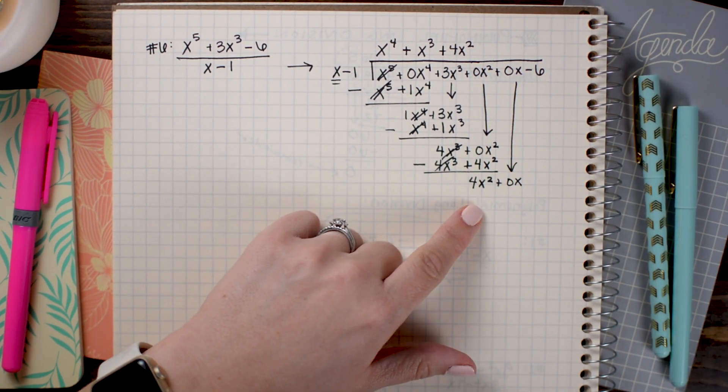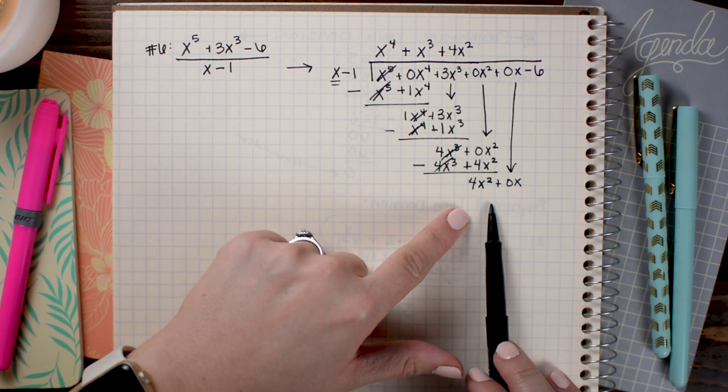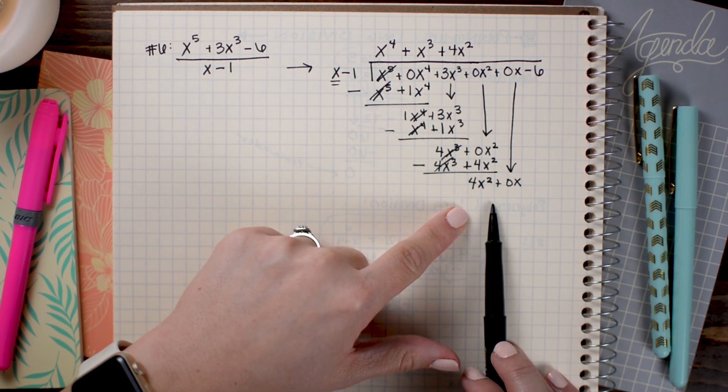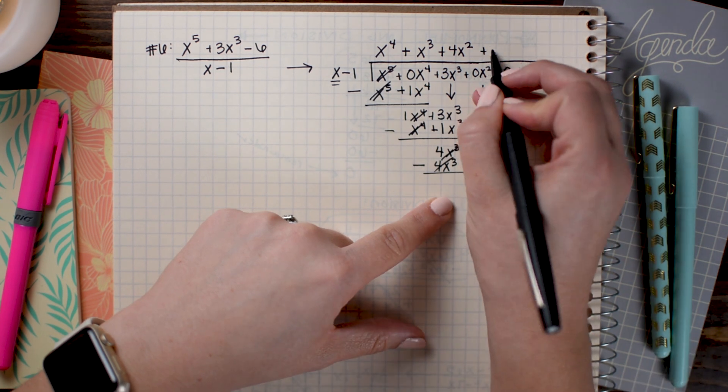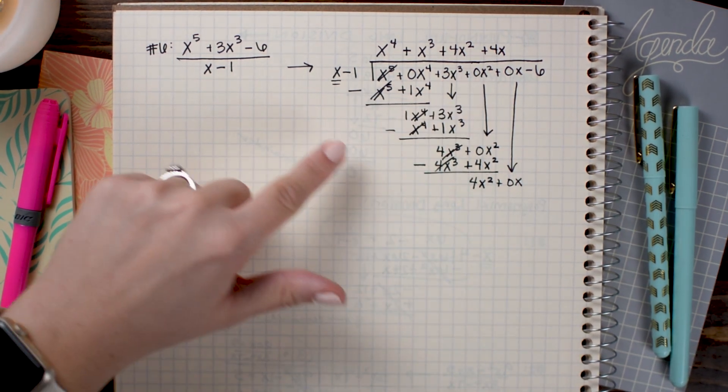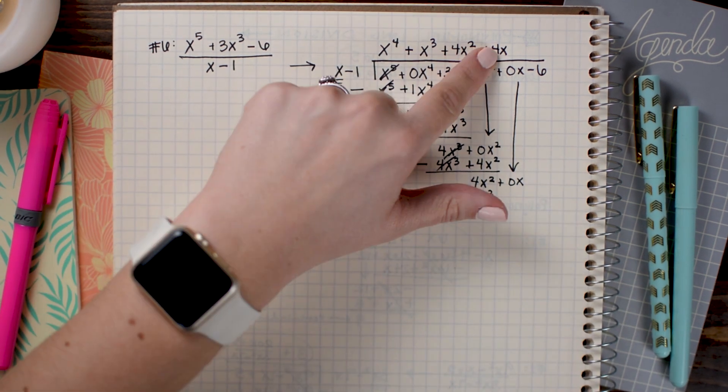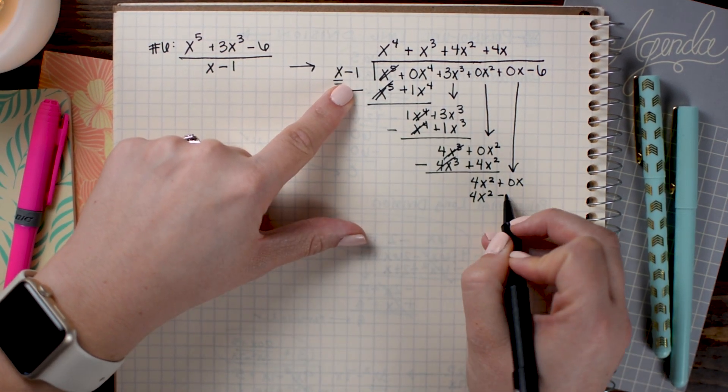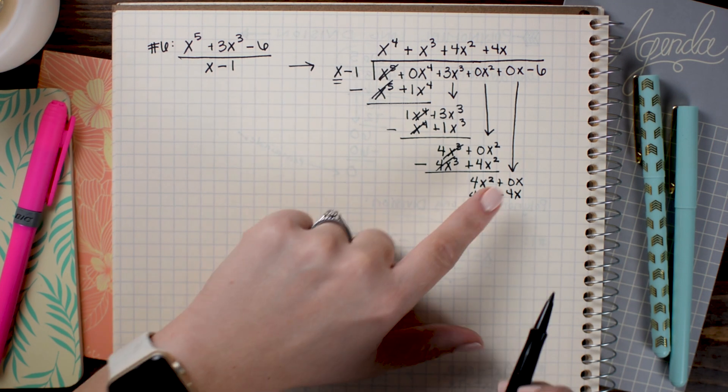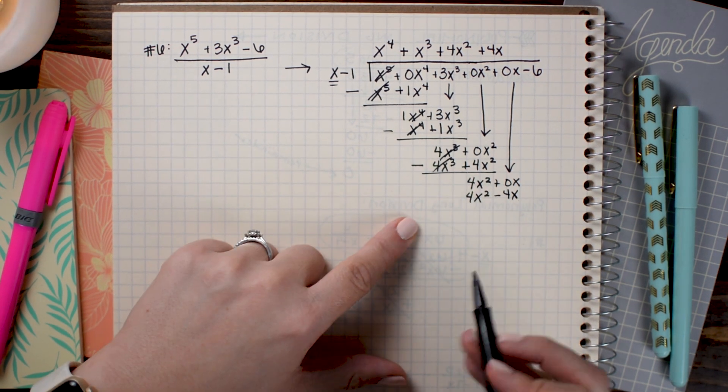x times what gives me 4x³? So I would need a 4x² to get that. So +4x² up here and then I multiply it through. For the next one I need x times what to get 4x². So that will be 4x. So 4x times x is 4x². And 4x times -1 is -4x. Again this 0x term is coming in handy.